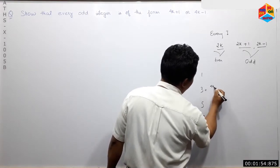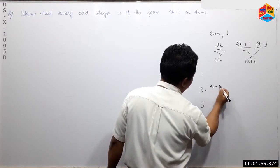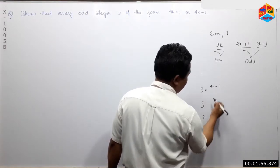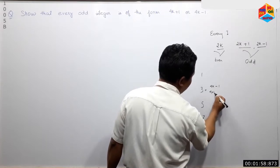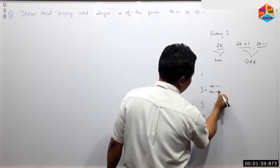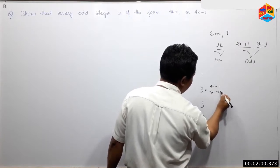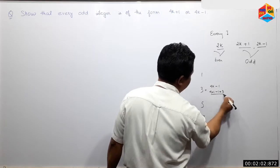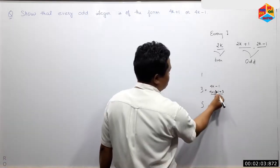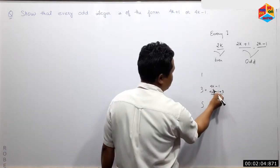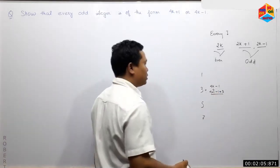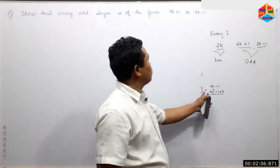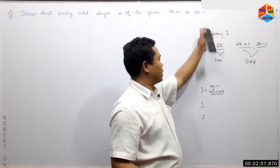4k minus 1. For example, 4 into 1 minus 1 is equal to 3. So 4k minus 1 is equal to 4k minus 1.